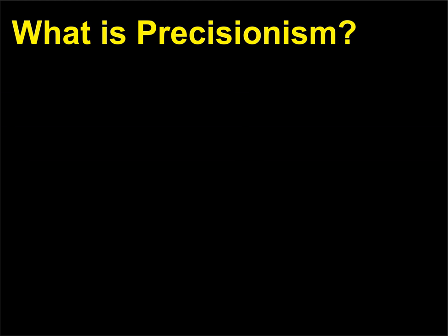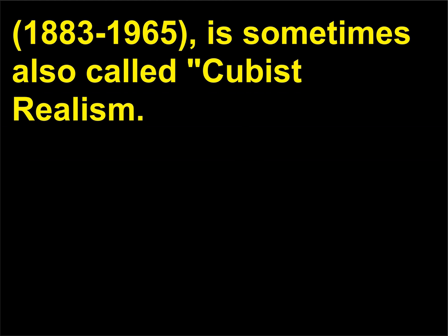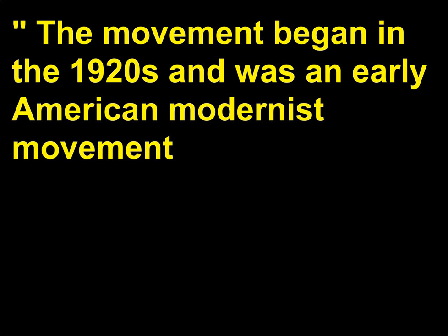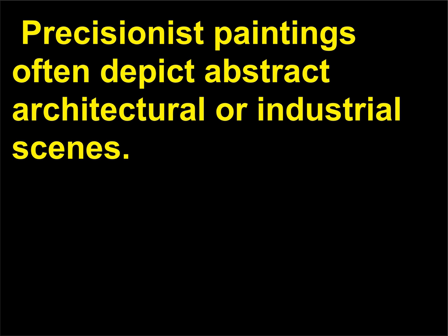What is precisionism? Precisionism, a term coined by American modernist artist Charles Sheeler (1883–1965), is sometimes also called Cubist realism. The movement began in the 1920s and was an early American modernist movement, characterized by geometric simplification and broad areas of flat, hard-edged color. Precisionist paintings often depict abstract architectural or industrial scenes.